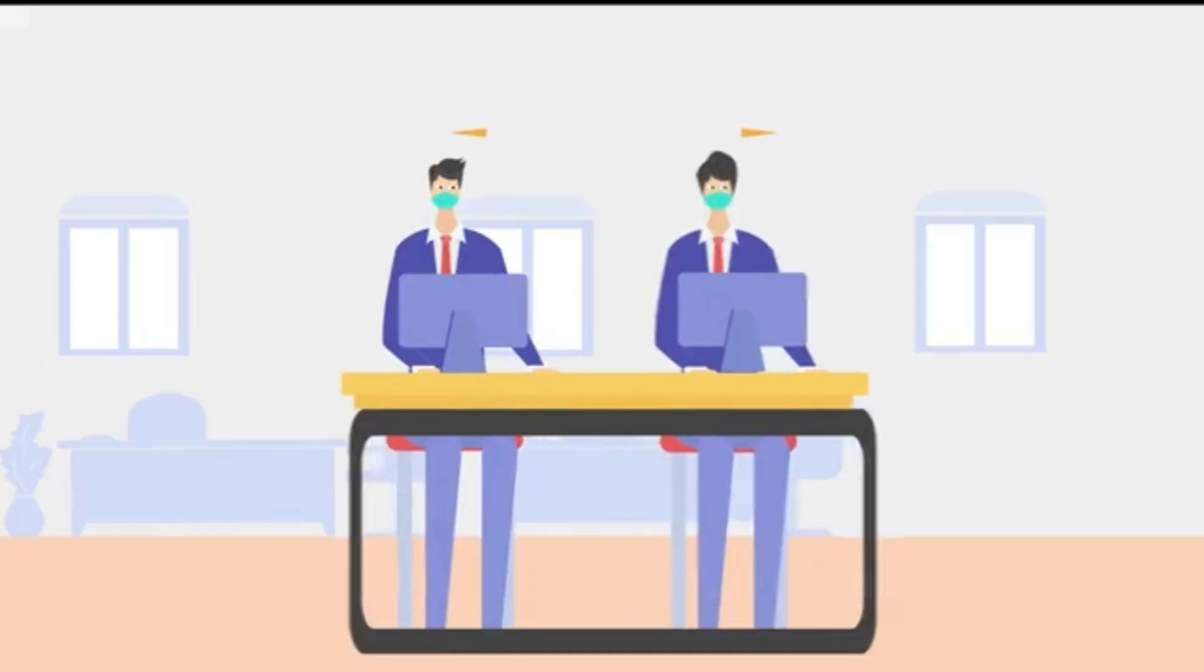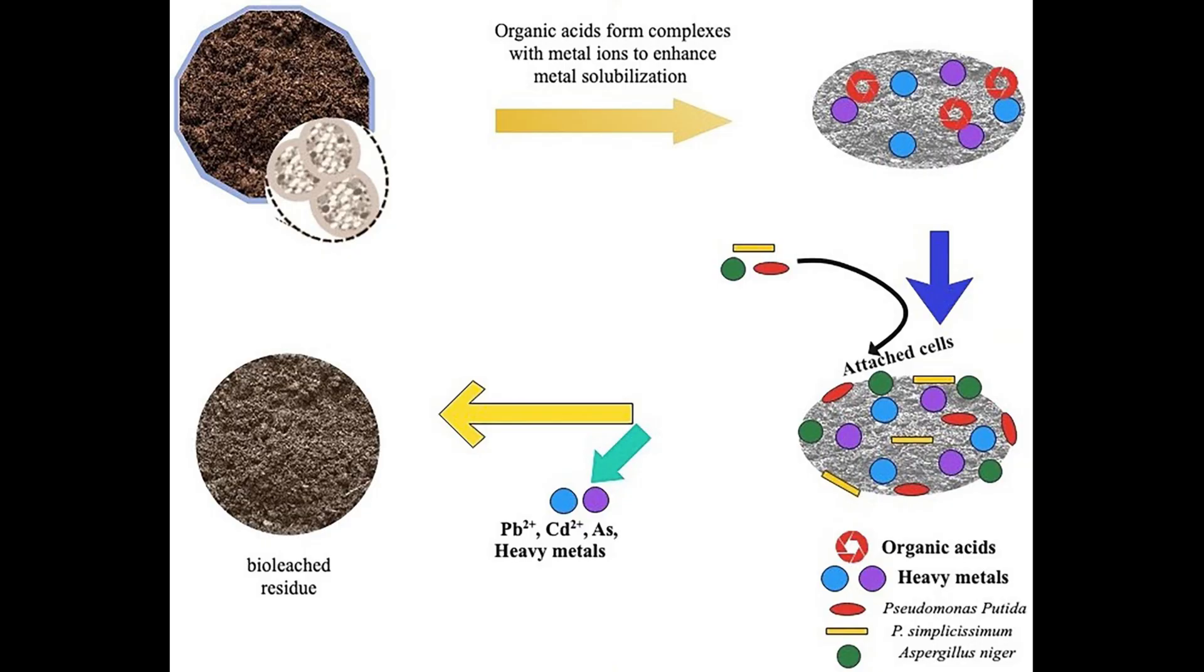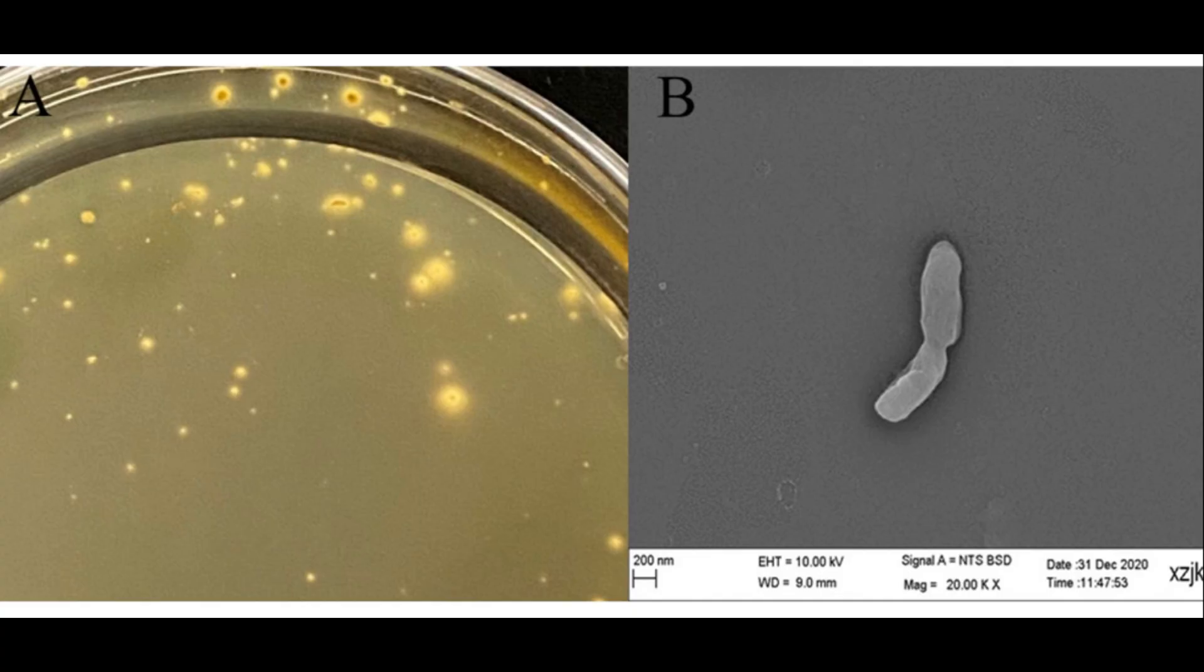Bioleaching is the microbial conversion of solid-bound metals into soluble forms. This process often involves acid-producing microbes like Acidithiobacillus ferrooxidans, which oxidize iron and sulfur compounds to generate sulfuric acid. This acid, in turn, dissolves metal ions from the waste matrix.